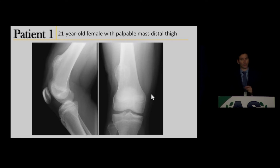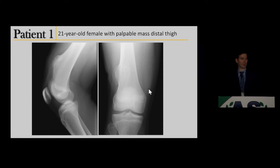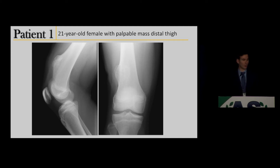Case 1: a 21-year-old female who came in with a palpable mass. She'd noticed it for a couple of years, thought it was getting bigger, kept rubbing her distal thigh, came in and got these x-rays, and they called you in the reading room to decide what to do next.